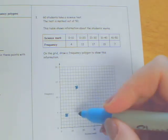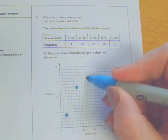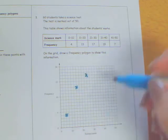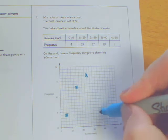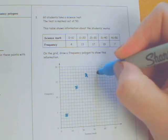20 to 30, I want to go all the way up to 17. So if that's 13, 14, 15, 16, 17. 30 to 40, we've got 19. So again, if that one there is 17, then 19.